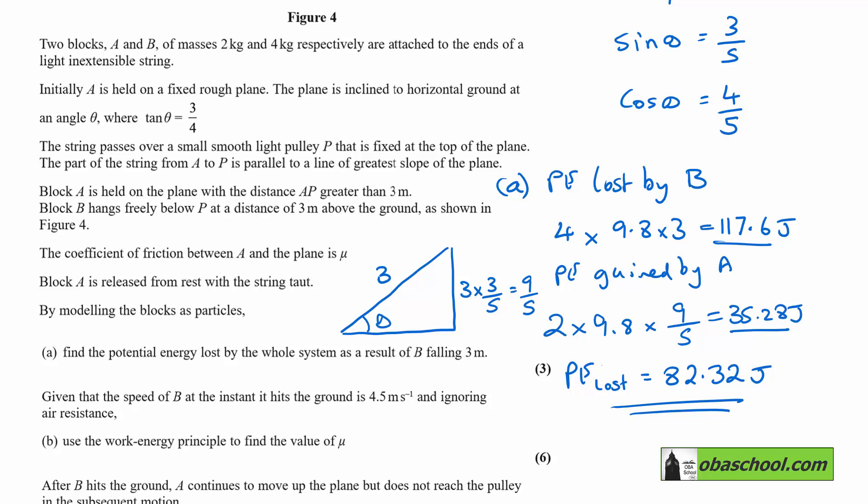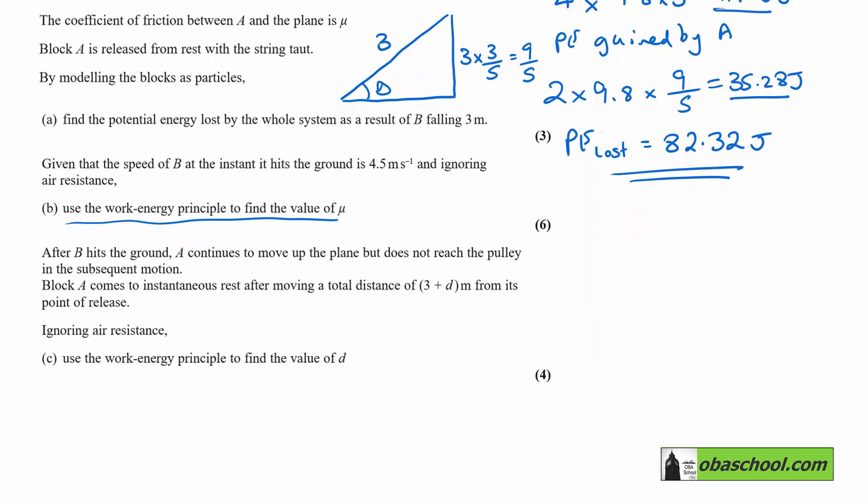In part B of the question, it says to use the work energy principle to find the value of mu. We need to think about the kinetic energy now. The kinetic energy gained is going to be the kinetic energy gained by A and the kinetic energy gained by B.